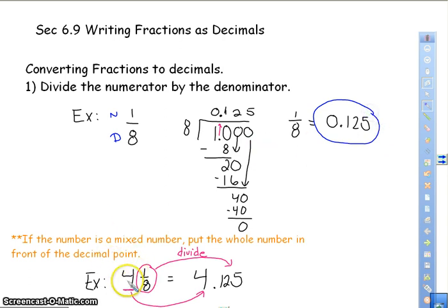If it's a mixed number, the 4 is going to go out front, and what you're going to do is you're going to divide your numerator by your denominator, and that's going to be the numbers that are going to be behind the decimal in your answer. So that's how you convert a fraction to a decimal.